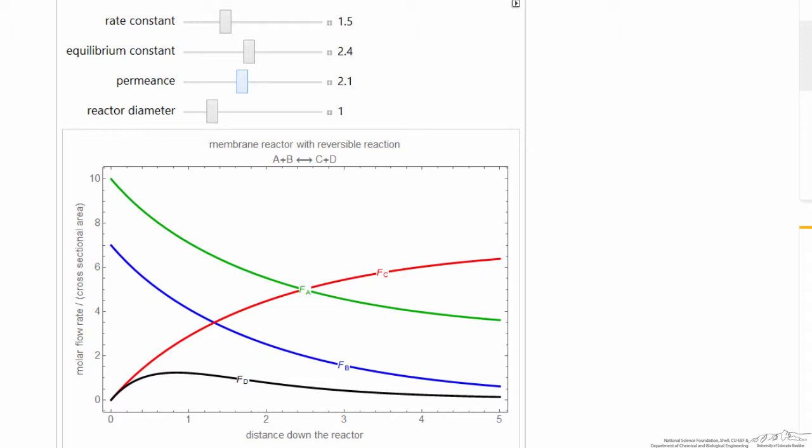So here's the interactive simulation, we're plotting the molar flow rate divided by the cross-sectional area, because we're going to be able to change the reactor diameter, versus distance down the reactor.